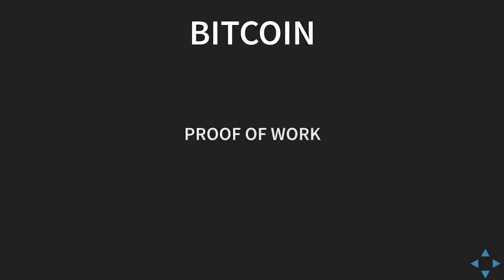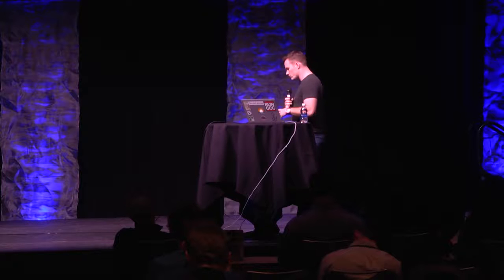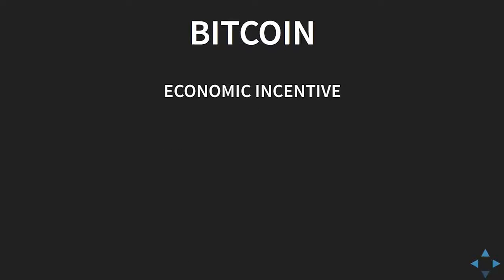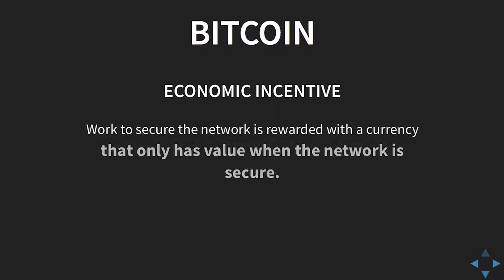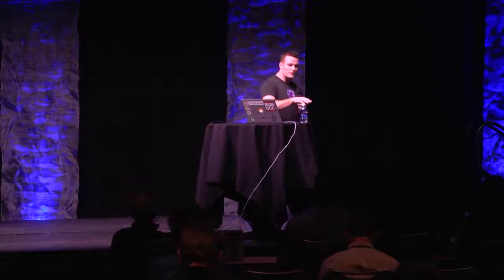Proof of work is a way to prove that you've done some degree of work. It's very simple — it's pure entropy, it's randomness. Your computer spends work, passes it through a hash mechanism, and if that hash matches a special arbitrary pattern, you are rewarded with some new currency. That's where the economic incentive comes from. The work done to secure the network is rewarded with a currency that only has value when that network is secure. If the network's security diminishes, if that database's security diminishes, so too does the currency's value.